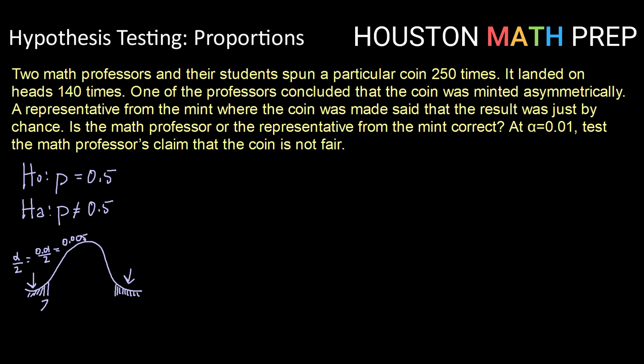So finding our z-critical value for each of those, knowing it will be the same, just one positive, one negative, you can use a z-table, or you can use inverse normal, however you like. Either way, your critical value should be negative 2.576 and 2.576.